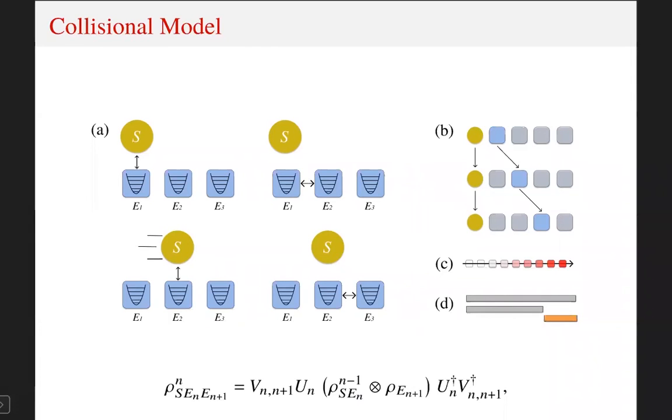One model which takes into account this is the so-called collisional models. We model the environment as a chain of units which interact with the system one at a time. This is by construction Markovian as the units never come back to interact with the system. We introduce the non-Markovianity in a controllable way by allowing interactions between the units.